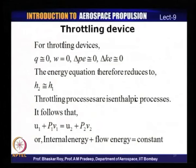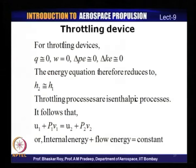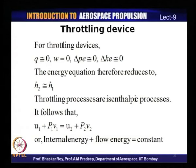The enthalpy across a throttling device is the same — throttling processes are isenthalpic, meaning enthalpy is constant. Since H2 equals H1, we can write U1 plus P1V1 equals U2 plus P2V2: the sum of internal energy plus flow energy is constant across a throttling device. You can have different values of internal energy at the inlet and exit, but that is compensated by a corresponding change in the flow energy.